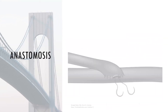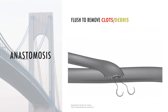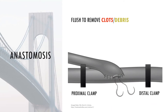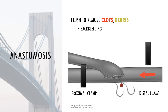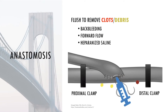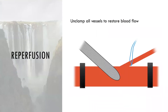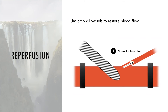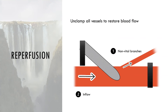One to two sutures before the anastomosis is complete, it should be flushed to remove any clots and debris within the lumen through the unfinished anastomosis. This is done by sequentially releasing and reclamping the inflow and outflow vessels and using heparinized saline. First the distal vessel is unclamped to allow back bleeding, then reclamped. Next the proximal inflow vessels are unclamped so forward flow pushes potential debris through. For reperfusion, once the anastomoses are completed, blood flow is restored by removing the vascular clamps and vessel loops. Outflow branch vessels not supplying an end organ are unclamped first, then the inflow vessel, and lastly the main outflow vessel.